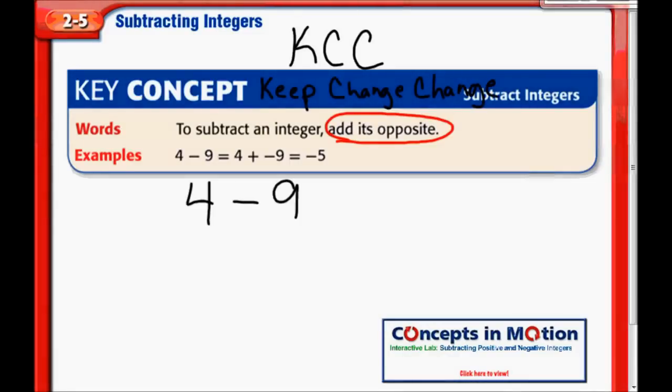Just a little quick, easy way to help remember what to do. So we're going to keep that first number. So it's going to stay a 4. Then we're going to change the sign. It's currently minus. We're going to make that plus. And then the opposite, add the opposite of the second number. So we're going to change this 9 to a negative 9.